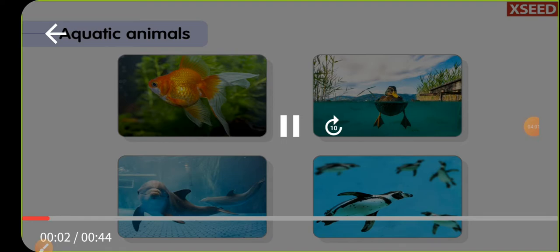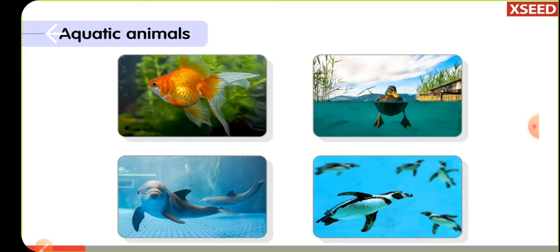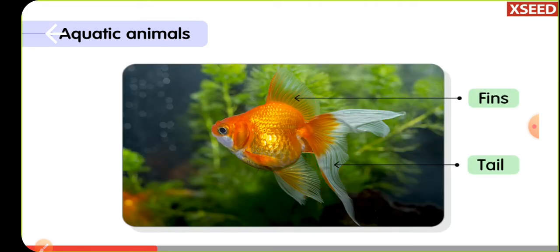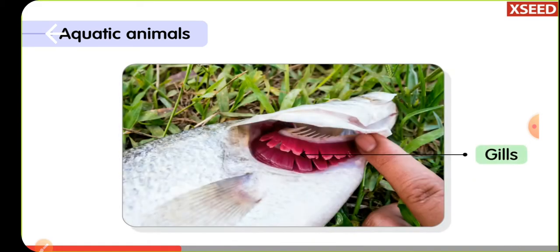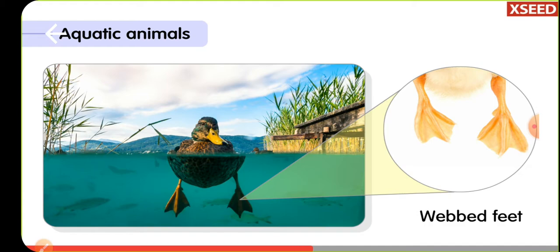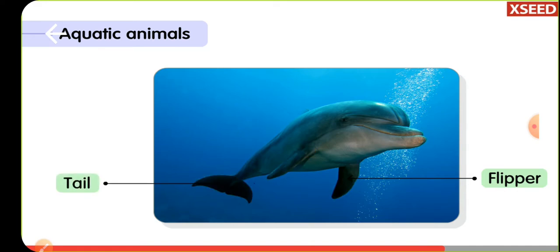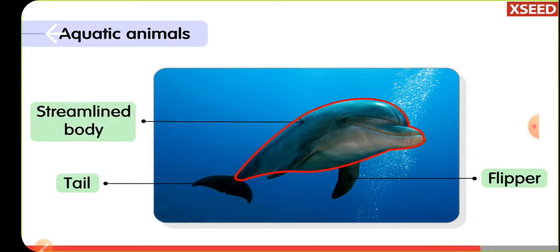Aquatic animals have special features that help them survive in water. Fins and tail help them to swim; gills help them breathe; scales protect the fish from injuries. Webbed feet help animals like ducks and penguins to swim when they search for food in water. Flippers and tail help the dolphin swim, and a streamlined body helps in easy movement.